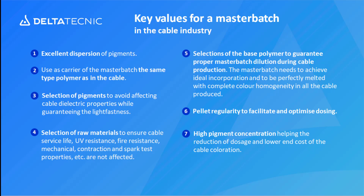Last but not least, there is the idea of high pigment concentration. This is a critical factor in terms of efficiency, quality, and most importantly, cost. When a color concentrate — a color masterbatch — has a high level of pigment concentration, this allows the cable manufacturer to reduce the dosage, and that allows you to lower your cost in cable coloration. When you use a lower quantity of masterbatch per 100 kilos of compound, you save money on masterbatch cost.